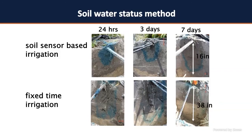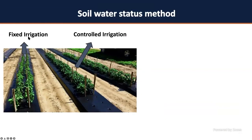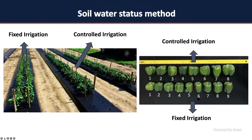The same trial was done for bell peppers comparing fixed versus controlled irrigation, with the same results — fixed irrigation produced yellowed plants while controlled produced darker, healthier plants. Interestingly, controlled irrigation produced fewer but larger fruits, while fixed irrigation produced more but smaller fruits. Proper irrigation management increases fruit quality and profit. Yield for bell pepper increased by 11% with controlled irrigation.